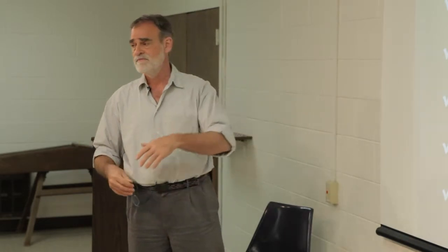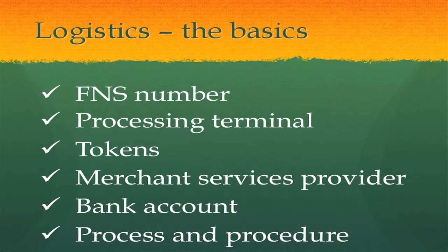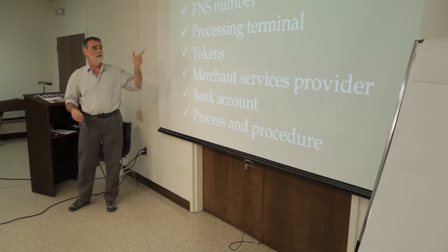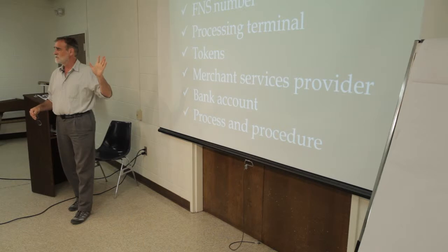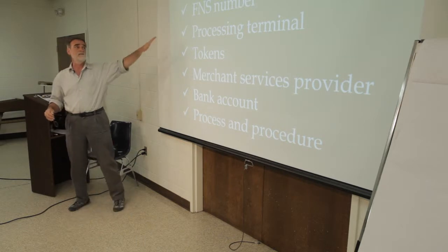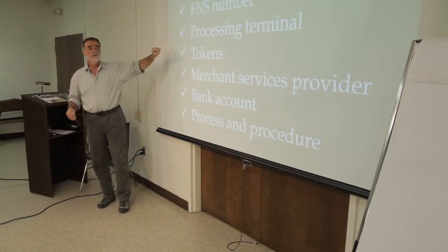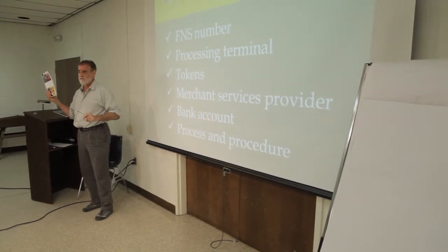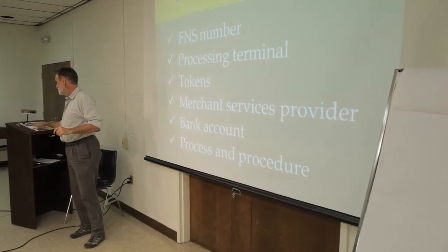Once you've established that this is something you'd like to try, then here are the logistics. And this is the basics. This is a framework, and then you can begin to ask me questions. Food and nutritional service, FNS number. You're going to need one of those. Anybody who handles SNAP, whether it's a grocery store or a farmer's market, gets an FNS number. And these handouts have the contact information and all that in it.